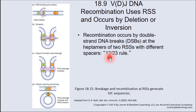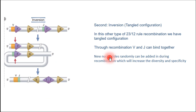RAG1 and RAG2 proteins identify the RSS motif and bind to them, then break the double-stranded DNA. A loop is lost and V and J are joined together. Between V and J, nucleotides will be inserted randomly — we will talk about that in a minute. That was the first mechanism of somatic recombination: deletion via hairpin loop configuration.